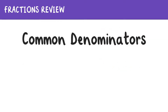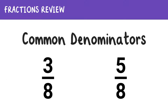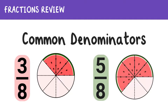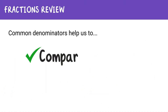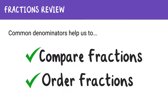When two fractions have the same denominator, we call them fractions with common denominators. For example, 3 eighths and 5 eighths both have a denominator of 8. First we see 3 eighths of a watermelon, and then we see 5 eighths of a watermelon. When fractions have a common denominator, the parts are the same size. And when we have a common denominator, we can easily compare and order fractions. Pretty cool, right?